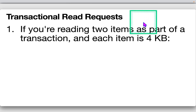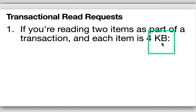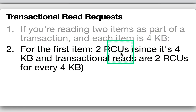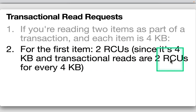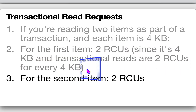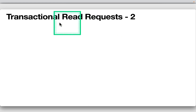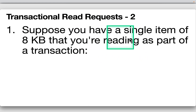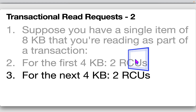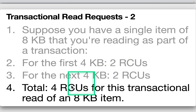For a transactional read of two 4KB items: each item costs two RCUs (transactional reads require two RCUs per 4KB), totaling four RCUs. For a single 8KB item read as part of a transaction: the first 4KB costs two RCUs and the next 4KB costs another two RCUs, totaling four RCUs for the transactional read.